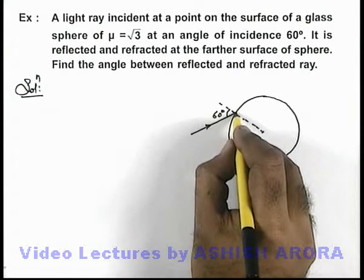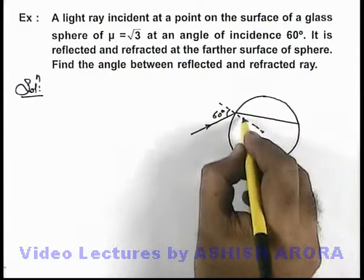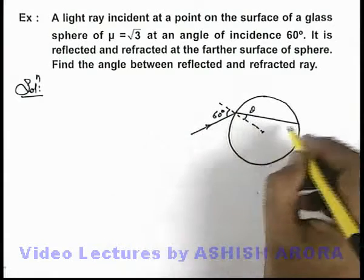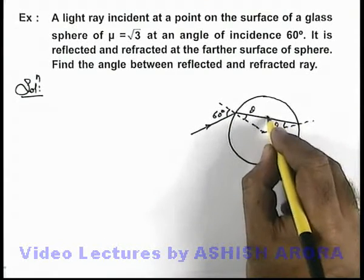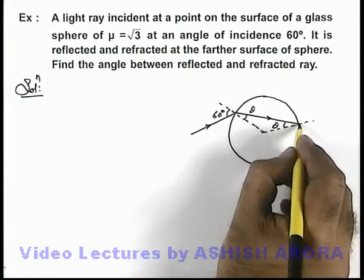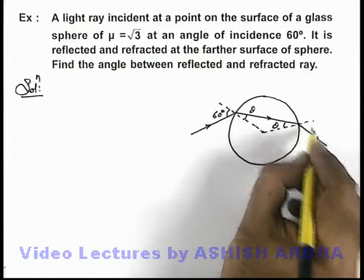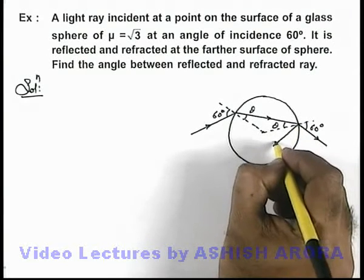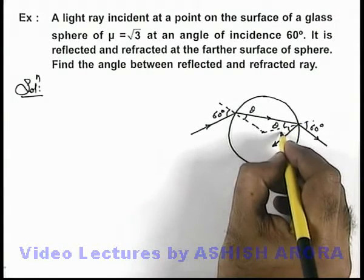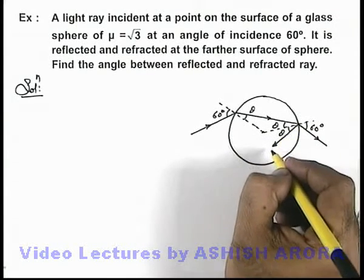If the light ray is refracted at an angle θ, then on the farther surface of the sphere it will also be incident at the same angle θ, and finally it will be refracted out at the same angle 60 degrees. The reflected ray will be reflected according to the laws of reflection, at the same angle of reflection θ.